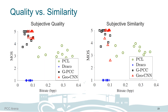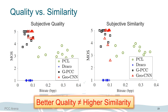We notice some interesting results. GeoCNN has higher MOS in subjective quality but lower MOS in subjective similarity. This indicates that the output point cloud from GeoCNN is more visually appealing to users, but not really similar to the input point cloud. Due to time limitations, we only present sample results of our user study. For more detailed results, please refer to our paper.